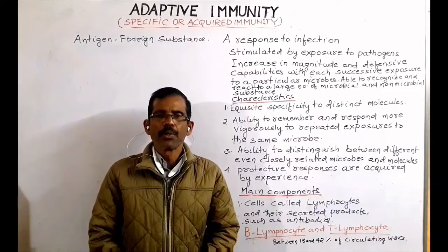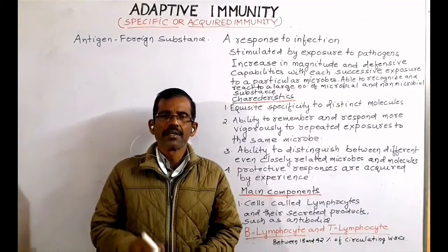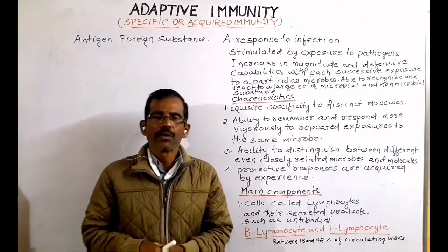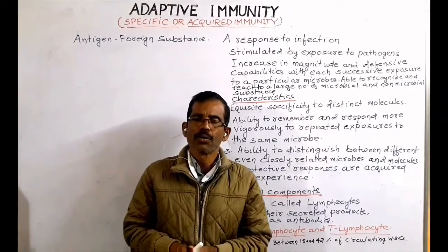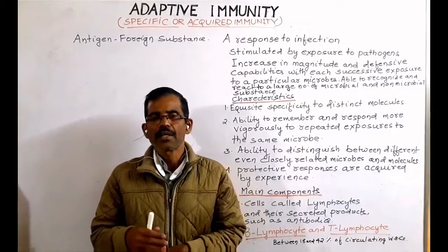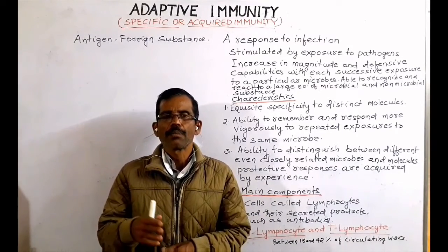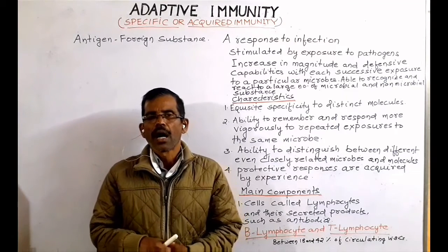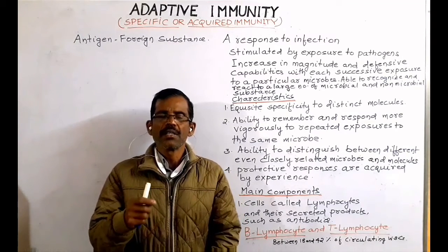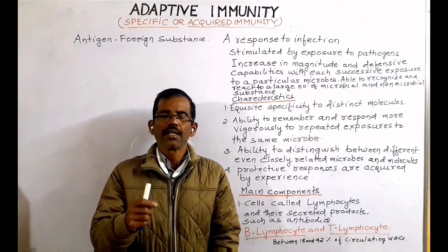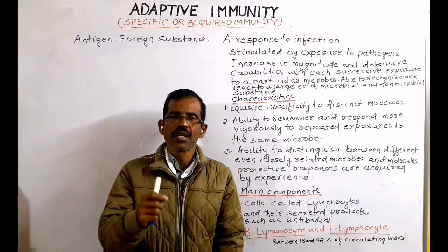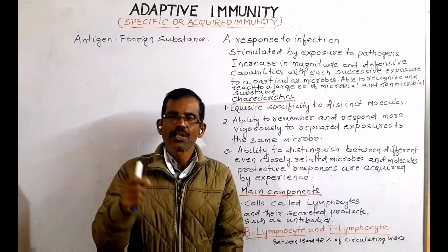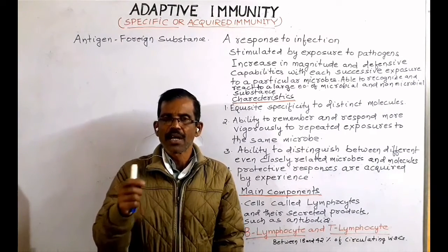Adaptive immunity is able to recognize and react to a large number of microbial and non-microbial substances. The first defining characteristic of adaptive immunity is its exquisite specificity to distinct molecules, indicating that the adaptive immune response is of a specific nature.